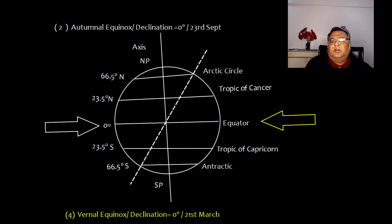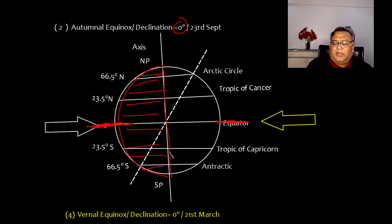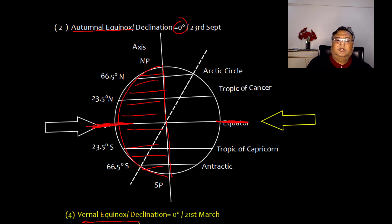On autumnal equinox, the declination is 0°. The sun's rays fall exactly at the equator, and the entire earth divides equally between day and night. There are equal periods of day and night whether it is autumnal equinox or vernal equinox. This explains the variable day and night throughout the earth across the seasons.